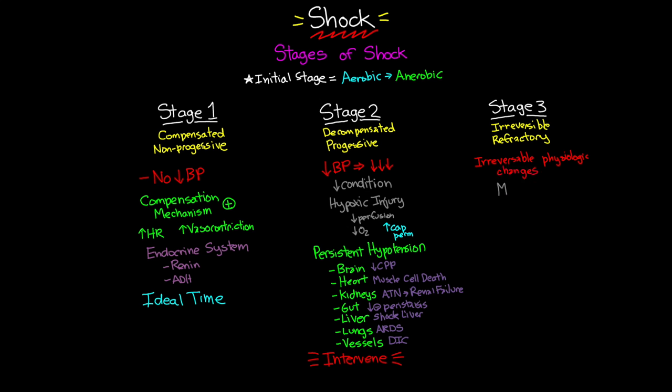The first category is hypovolemic shock, which is essentially a lack of blood volume. Within this category there is only this one type of shock. The next category is cardiogenic shock.